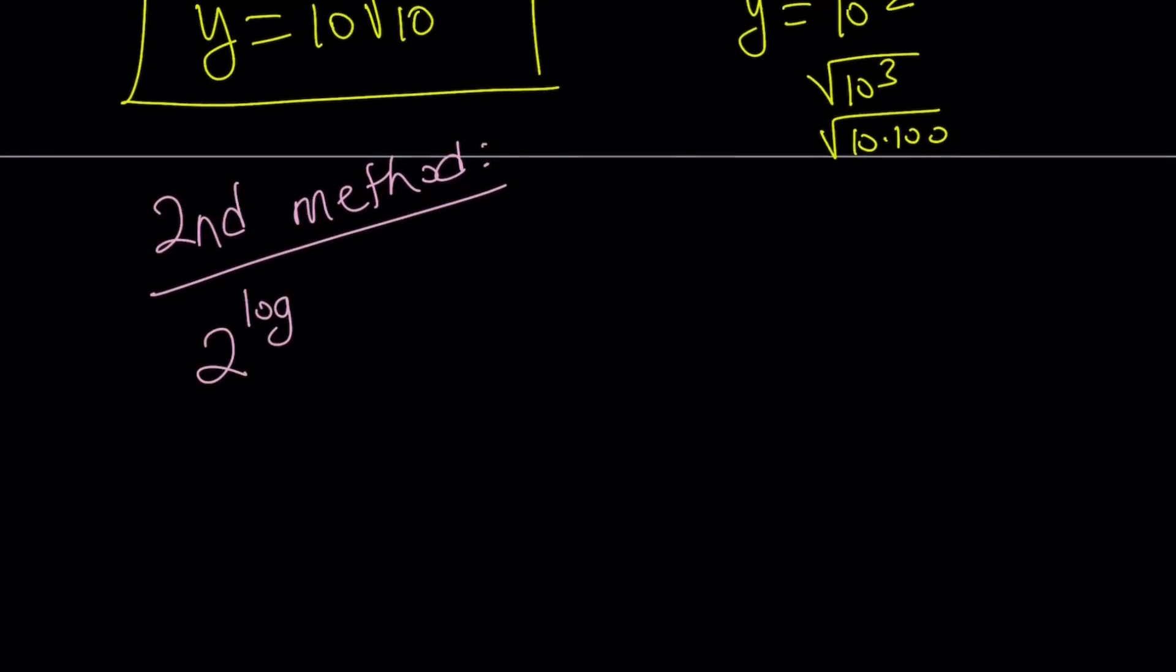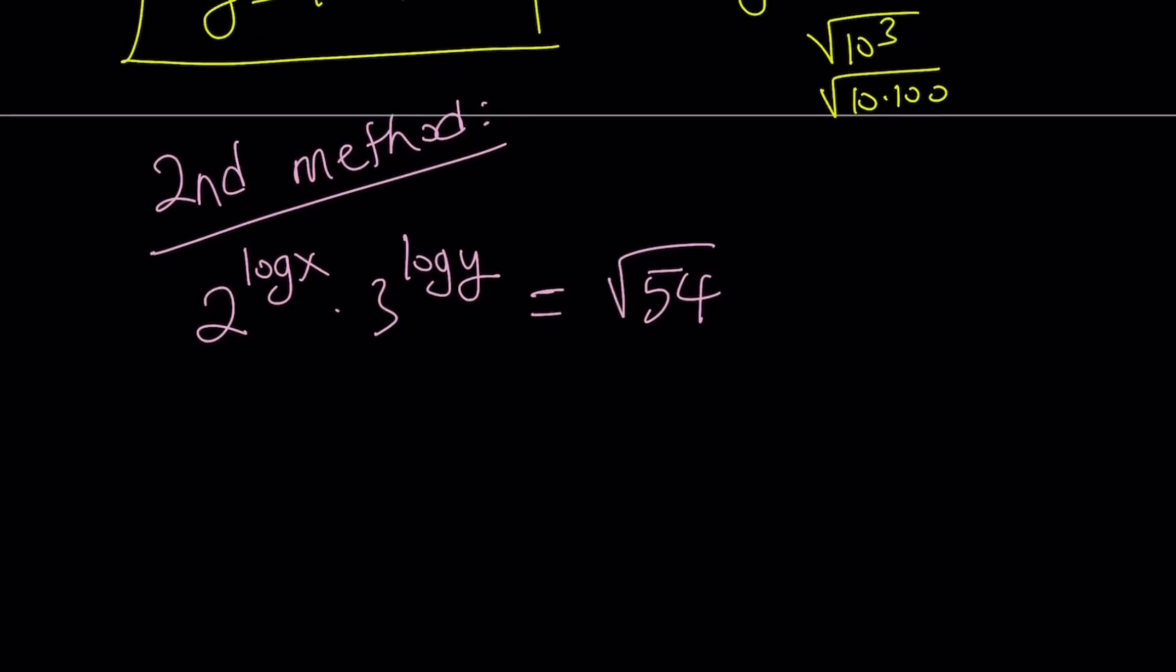For my second method, I know we're not necessarily looking for integers here, but this fact just helps us real quick. So 2 to the power log x multiply by 3 to the power log y—I'm starting with the second equation—and that is equal to square root of 54. So now I want to break down the 54 into two factors such that one of the factors is a power of 2 and the other one is a power of 3. And this can be done because 54 is 2 times 27.